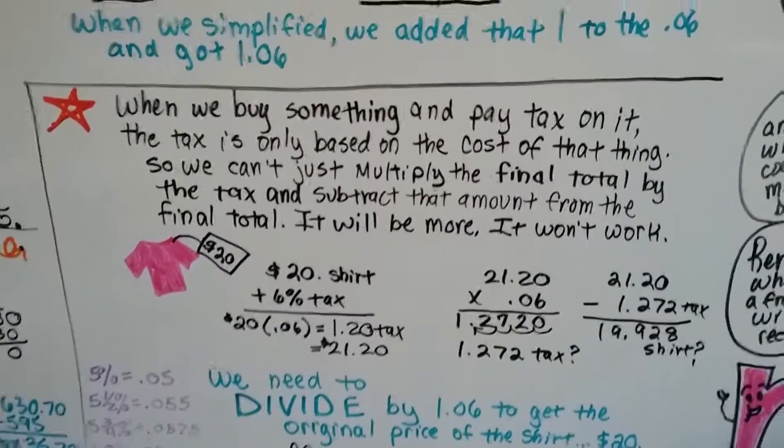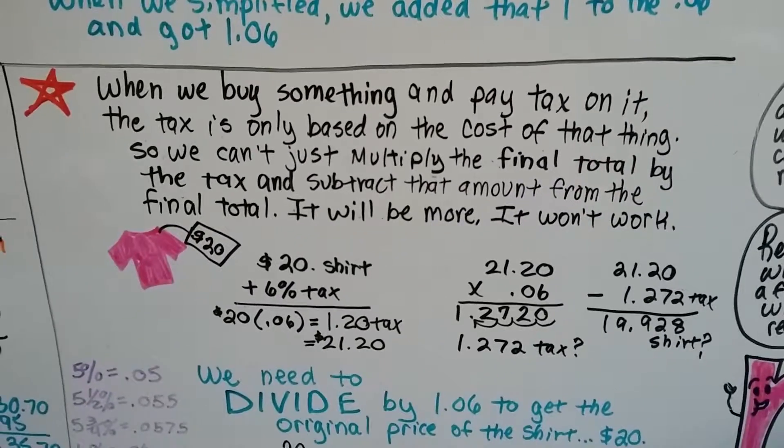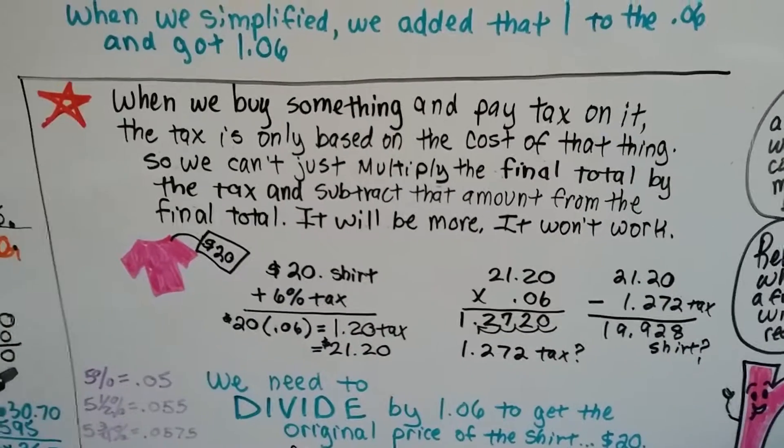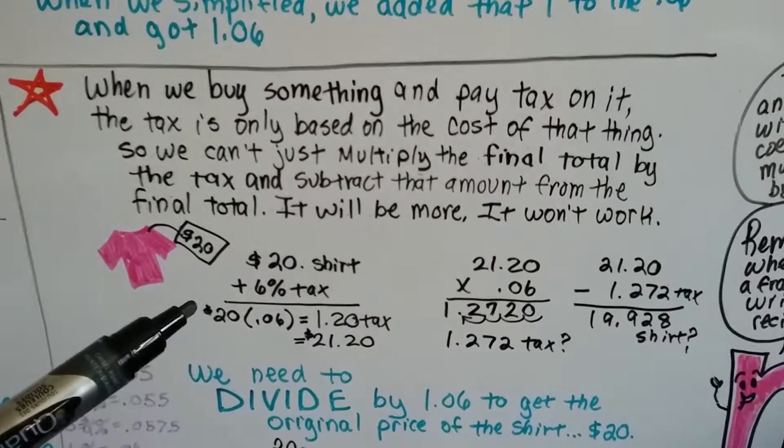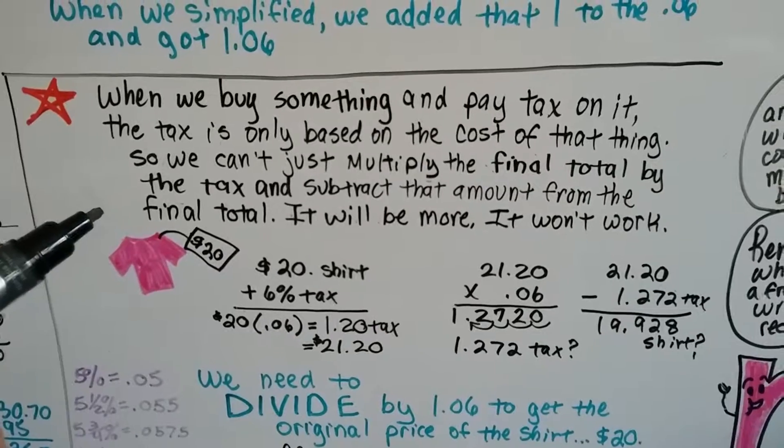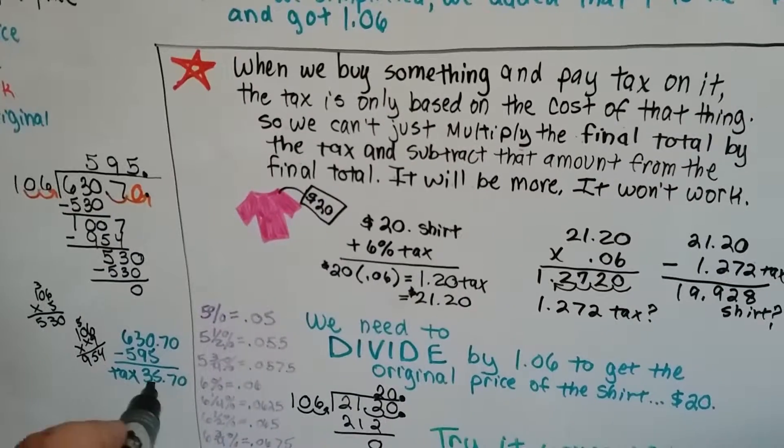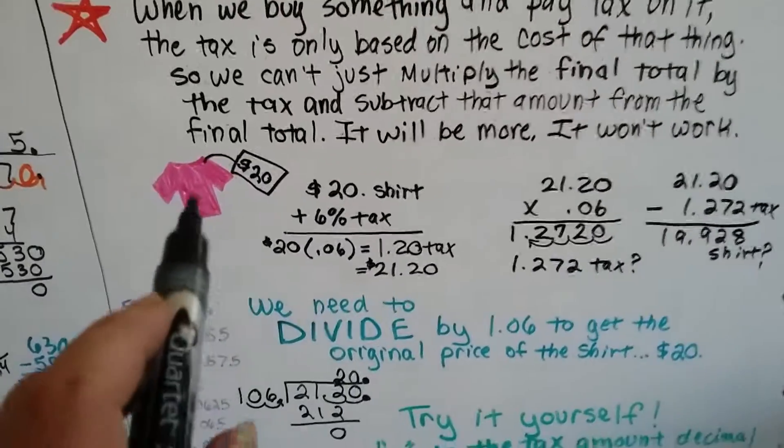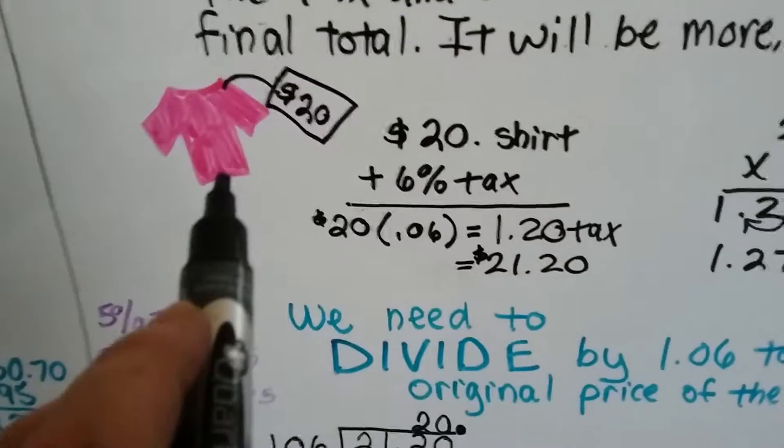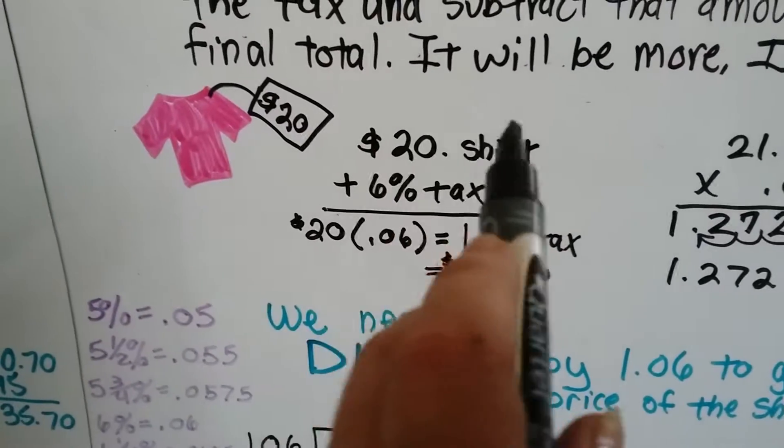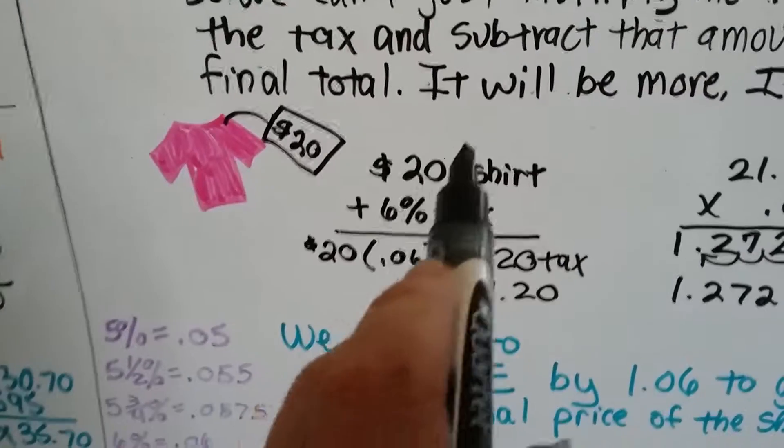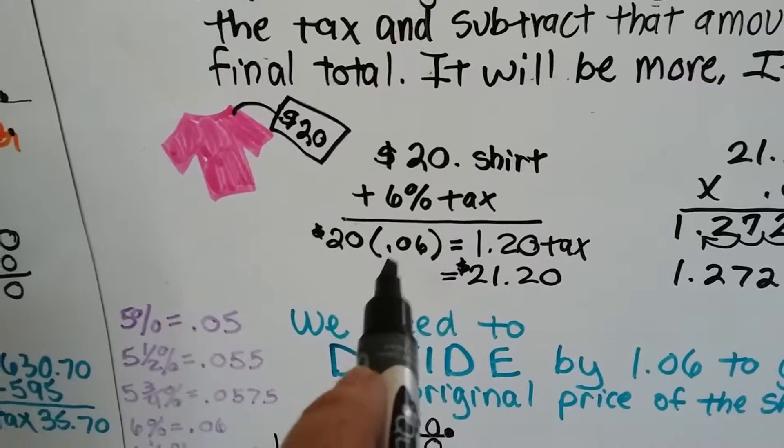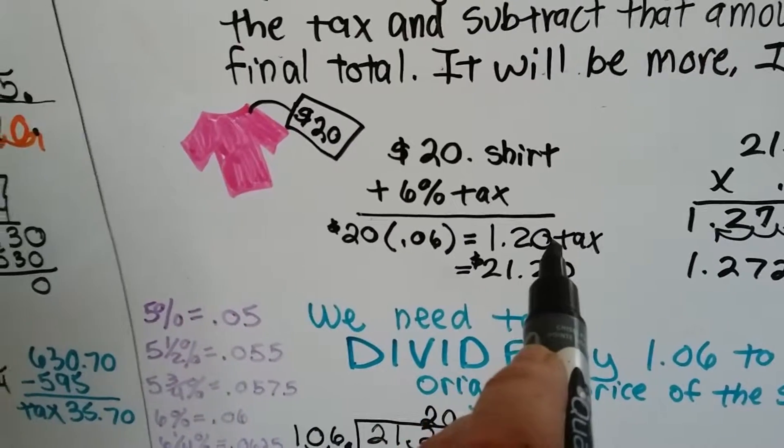And so here's my explanation. When we buy something and we pay tax on it, the tax is based on the cost of that thing, the price tag. So we can't just multiply the final total by the tax decimal point and then subtract that amount like $35 from the $630. It won't work. It'll be more. So here's an example. We have a shirt that costs $20. Here's our $20 shirt and there's a 6% sales tax. We need to add that to the shirt. So to find out what the tax is, we have to multiply the $20 times .06. I come up with $1.20 in sales tax.